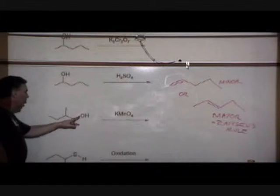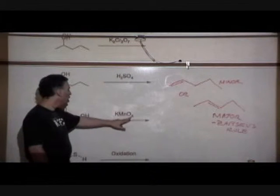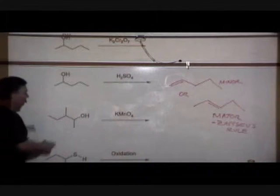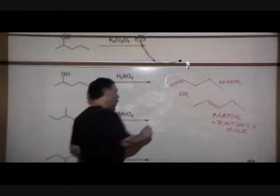Next one is alcohol again. Oxidization, that's the KMnO4, potassium permanganate. Our second oxidizing agent. Again, because it's a secondary alcohol, it's going to produce a ketone.